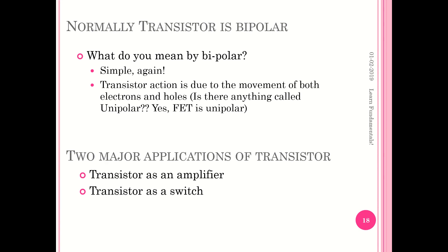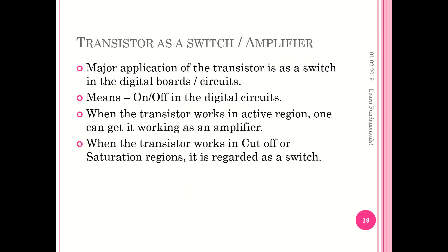Normally we call the transistor a bipolar transistor — BJT, or bipolar junction transistor. Why bipolar? Transistor action is initiated due to the movement of both electrons and holes, so it is called bipolar. There is also something called unipolar — the field effect transistor, which is unipolar. The major applications of the transistor are as an amplifier and as a switch. When the transistor works in the active region it functions as an amplifier; if it works in the cutoff region or saturation region we call it a switch. Transistor as a switch and as an amplifier is the most obvious application any interviewer would expect you to know.